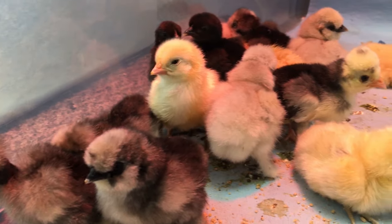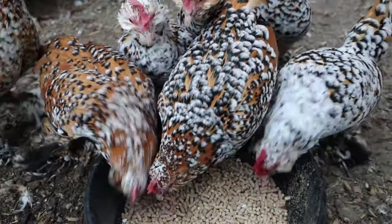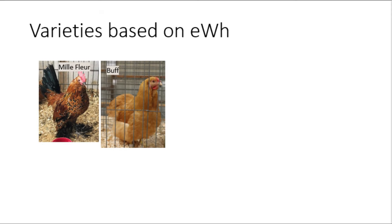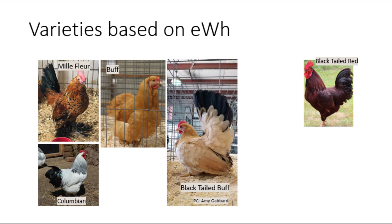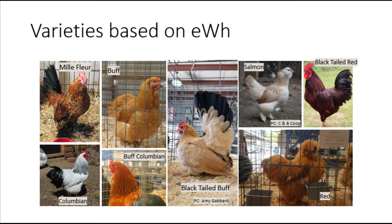There are many very different varieties that can be made using the Wheaten base. Although Partridge can be used, Millefleur and the buff variety can both be made on Wheaten, and the best buffs are said to be made using the Wheaten base as opposed to Partridge. Varieties like black-tailed buff, black-tailed red, Columbian, buff Columbian, salmon, and red can all be made on Wheaten.